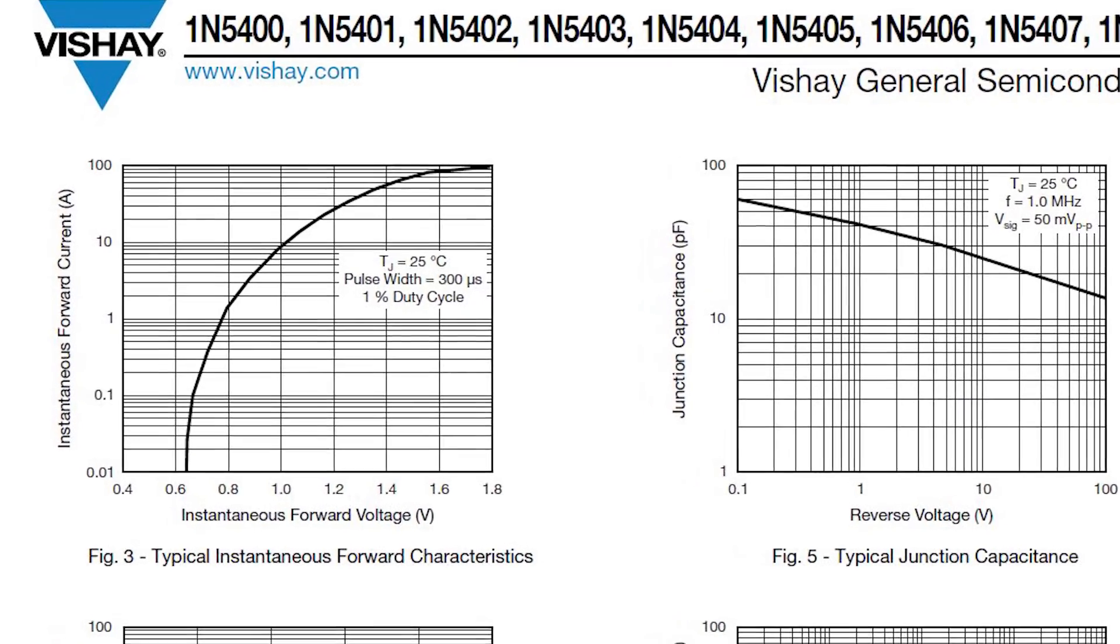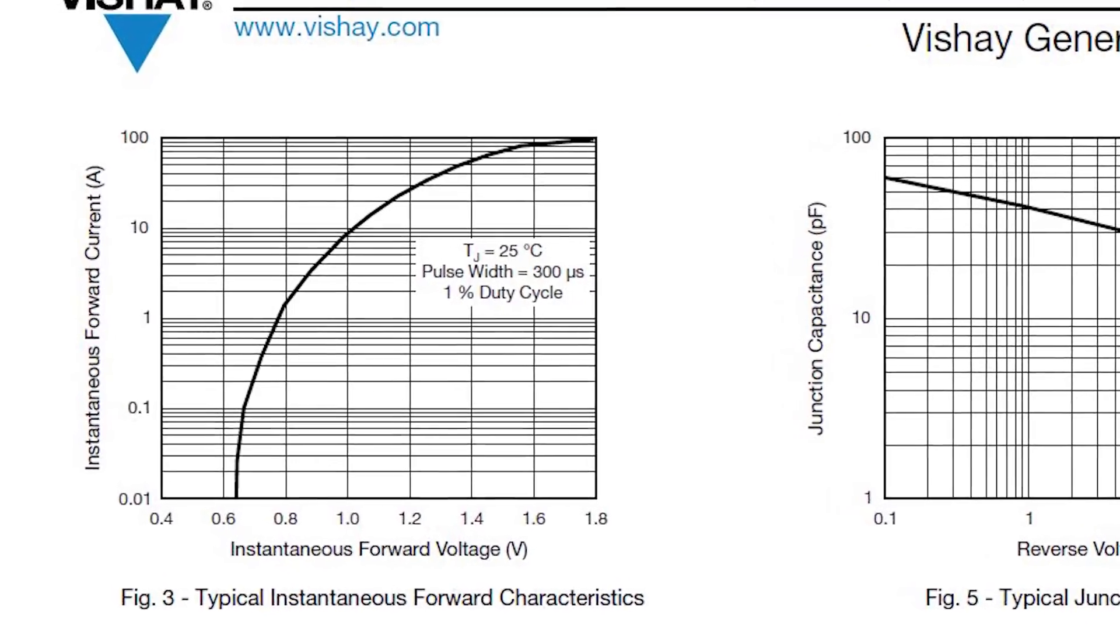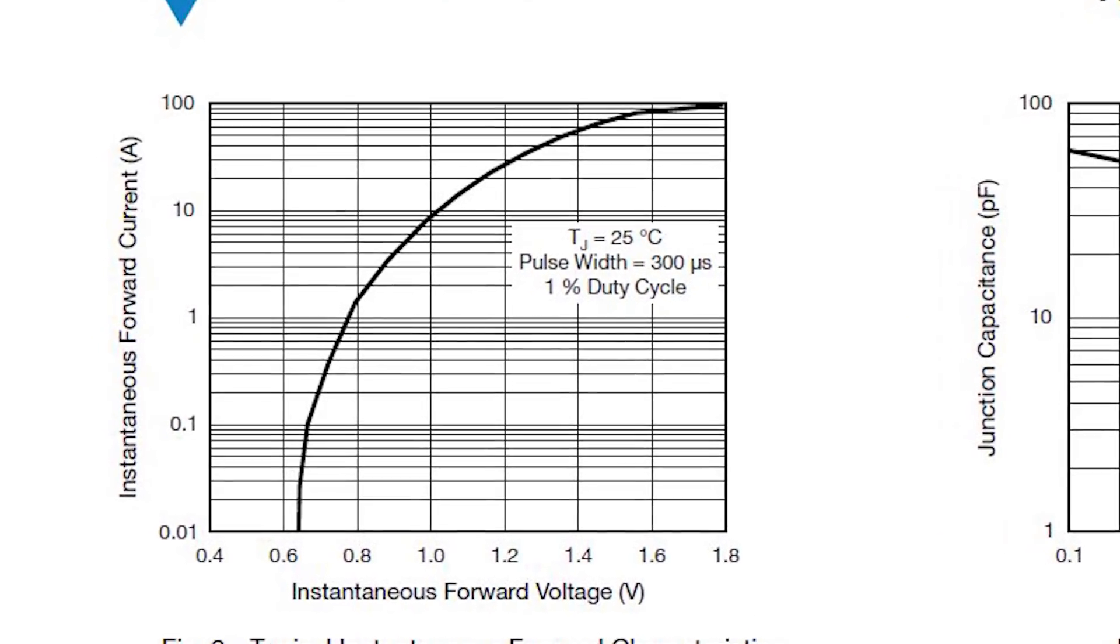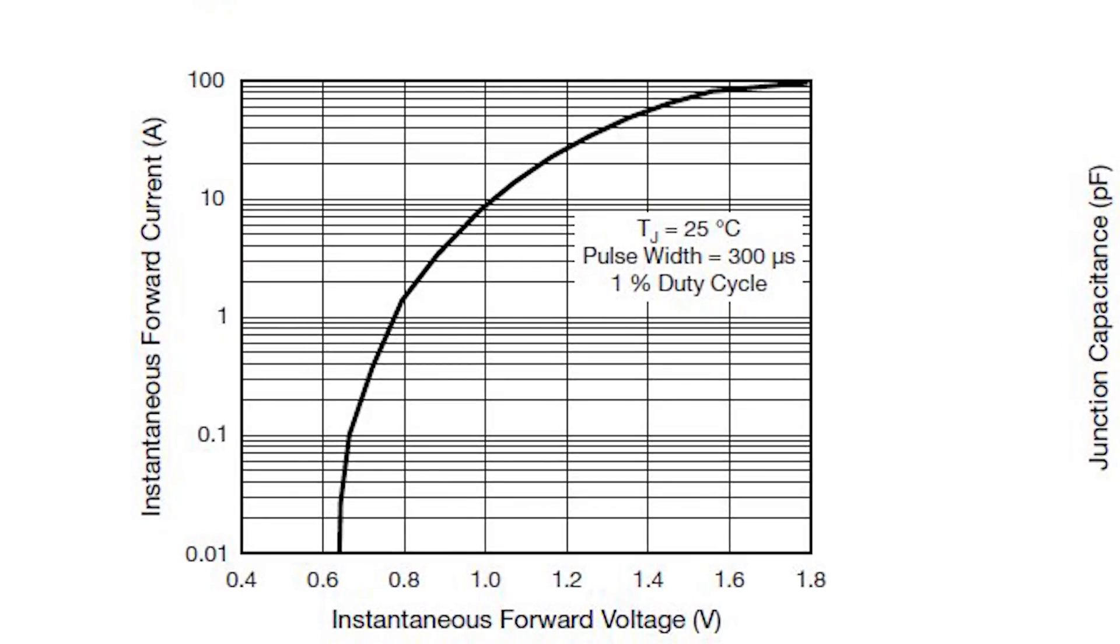And comparing with the S3G diodes, the 5404s have a lower forward voltage at 1A, which is more or less the current that our stepper motors are running, meaning that they will be closer to the dead zone voltage.